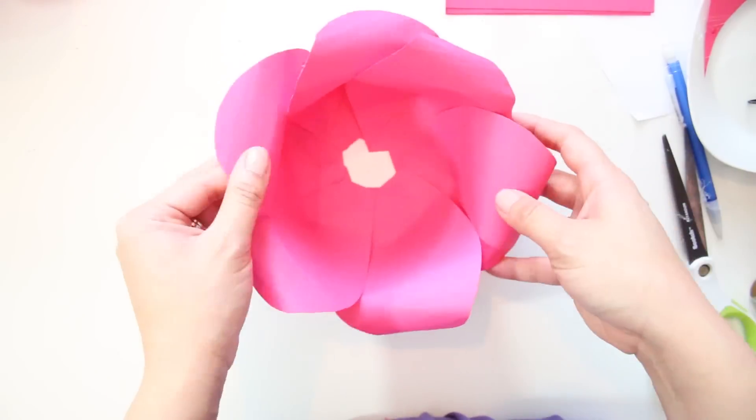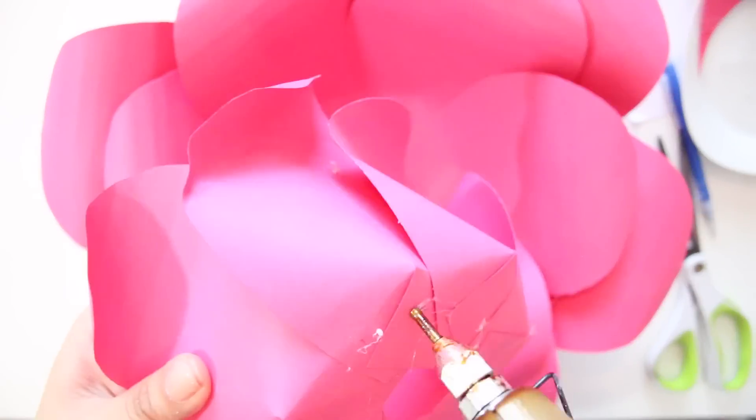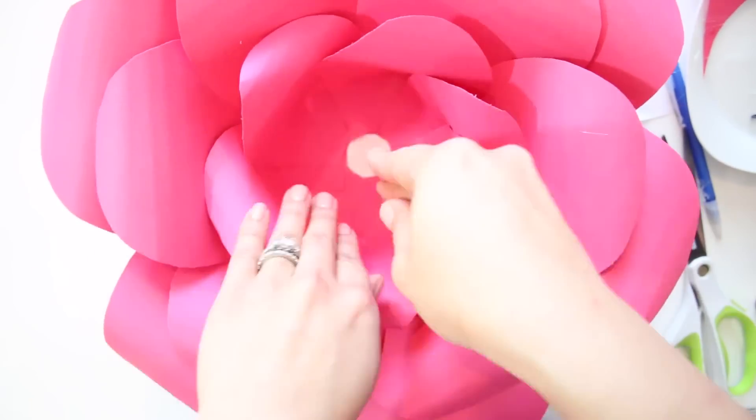Add some glue to the bottom of the smallest petal layer and attach it inside the medium layer.